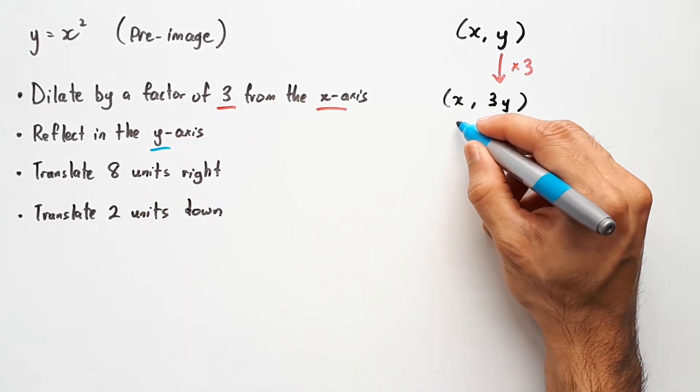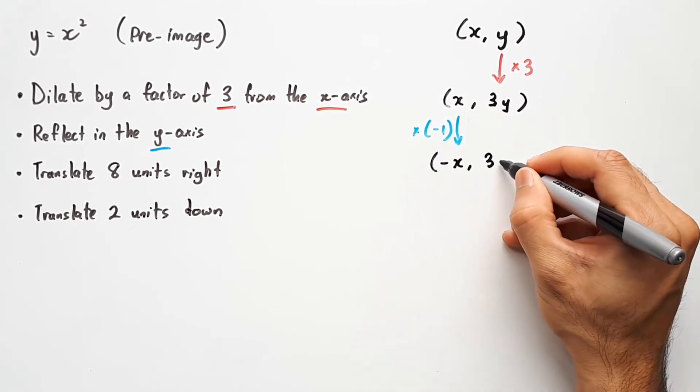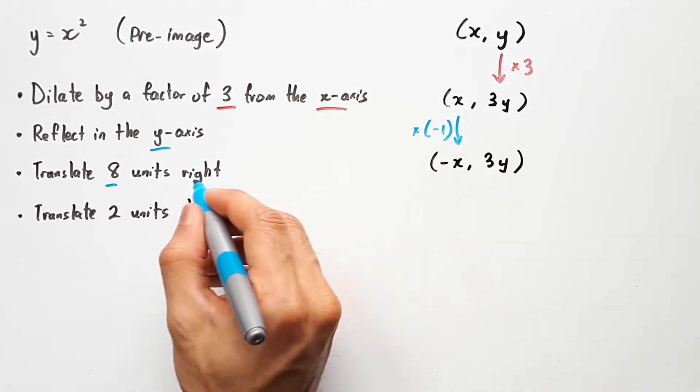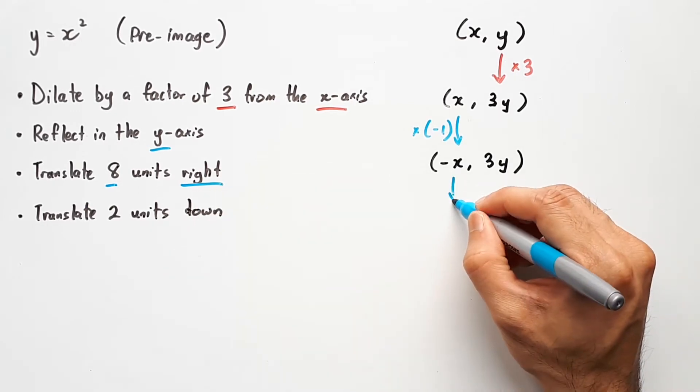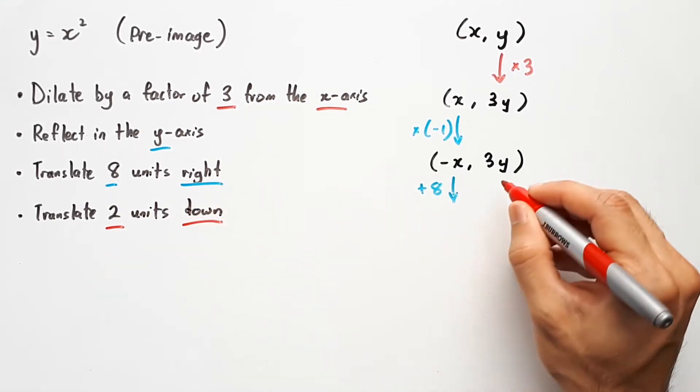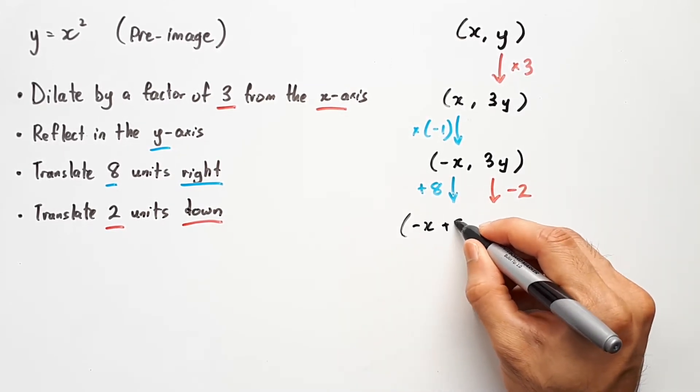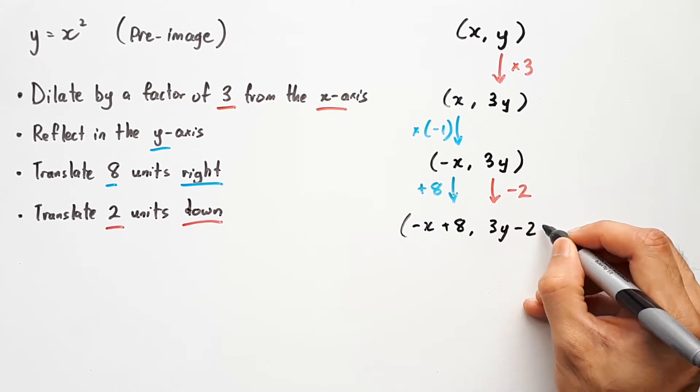Reflecting in the y-axis means you take the x-value and multiply by negative 1, giving us (-x, 3y). Translating 8 units to the right means to take -x and plus 8, while translating 2 units down means to take 3y and minus 2. And that results in (-x + 8, 3y - 2).